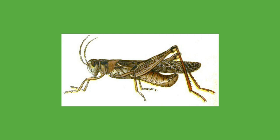Grasshoppers jump by extending their large back legs and pushing against the substrate — the ground, a twig, a blade of grass, or whatever else they are standing on. The reaction force propels them into the air. A large grasshopper, such as a locust, can jump about a meter, 20 body lengths, without using its wings; the acceleration peaks at about 20 g. They jump for several reasons: to escape from a predator, to launch themselves into flight, or simply to move from place to place. For the escape jump in particular there is strong selective pressure to maximize takeoff velocity, since this determines the range. This means that the legs must thrust against the ground with both high force and a high velocity of movement. A fundamental property of muscle is that it cannot contract with high force and high velocity at the same time. Grasshoppers overcome this by using a catapult mechanism to amplify the mechanical power produced by their muscles.